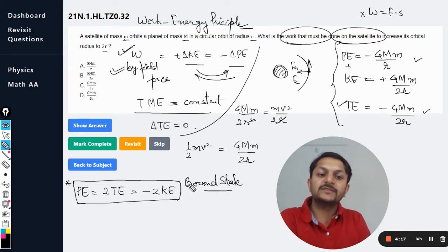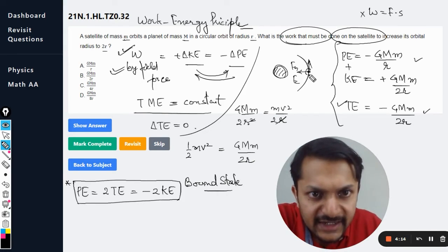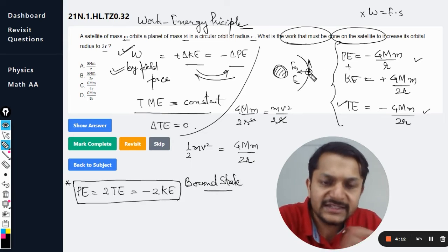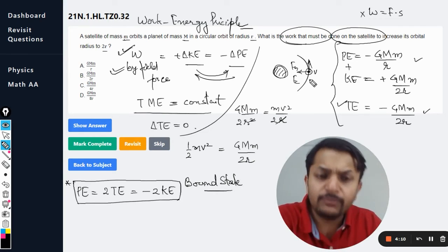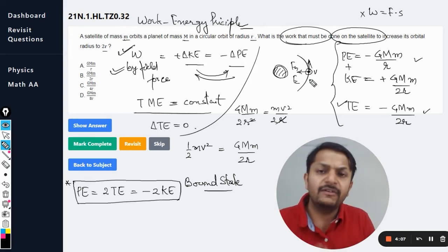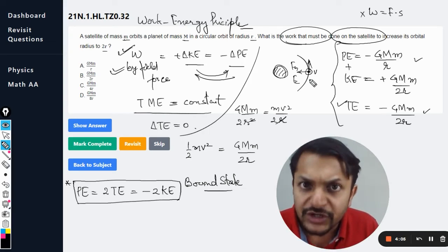Now what do you mean by this bound state? It means that this satellite, although it is having a certain velocity and kinetic energy, it is still bound with the planet Earth.